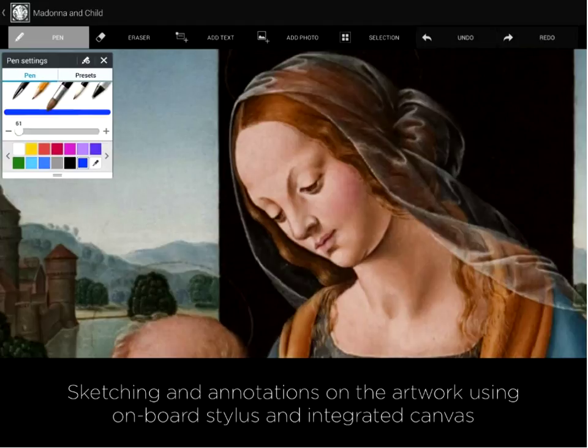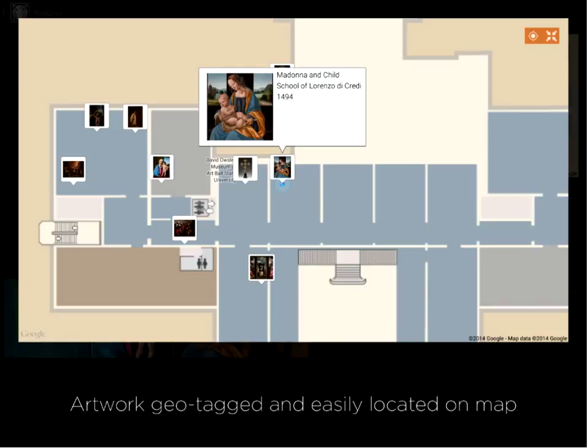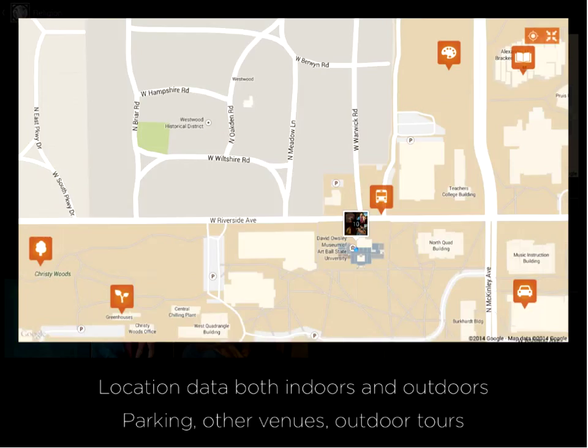Now I'm going to talk about the location and wayfinding we're bringing into this project. We are geotagging — identifying with latitude, longitude, and elevation — where each piece exists within the museum. Those are going to be identified with markers on our map of both the first and second floor. You can see my blue dot showing where I'm currently at in the museum space, and I can click on identified artwork to go to that detail screen.